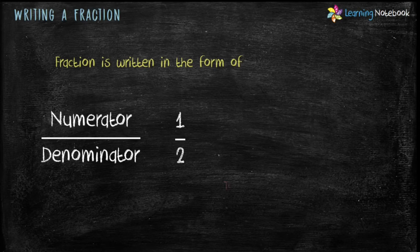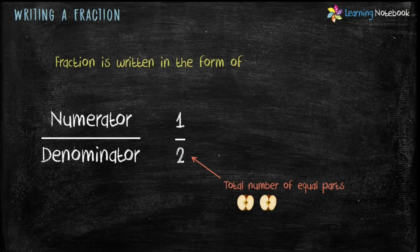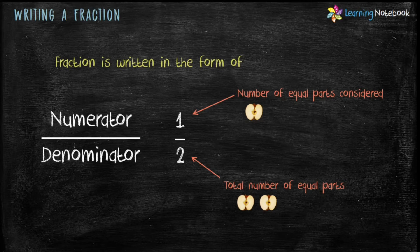Now what is Denominator? Denominator is the total number of equal parts. Like in the example of the apple, total number of equal parts are 2. Now what is Numerator? Numerator is the number of equal parts considered. Like in the example of the apple, the number of equal parts considered is 1.